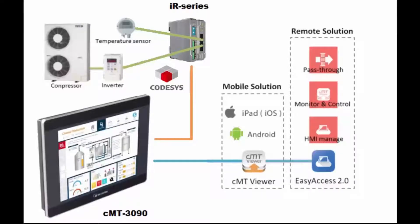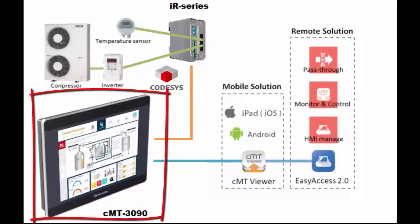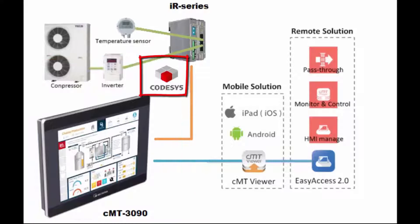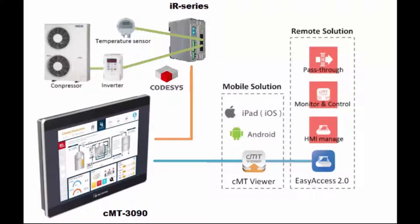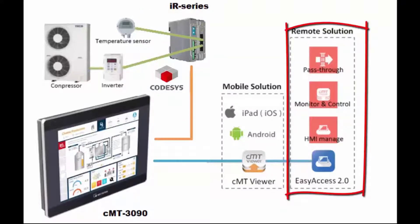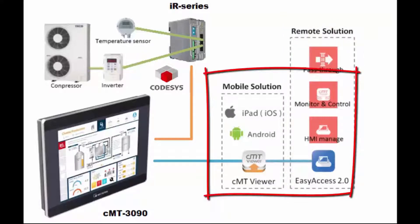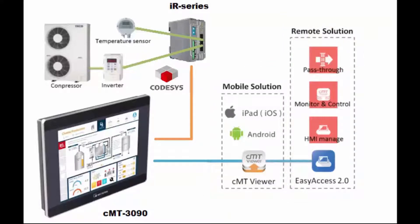Let's take a look at some of our newest and emerging technology. Here we have our CMT-3090 with CODIS activated. It takes the place of our PLC, and up here we have some of our IR series remote I/O. We will have analog and thermal inputs available very soon, and of course you have all the remote and local network connection interface options available on this platform.